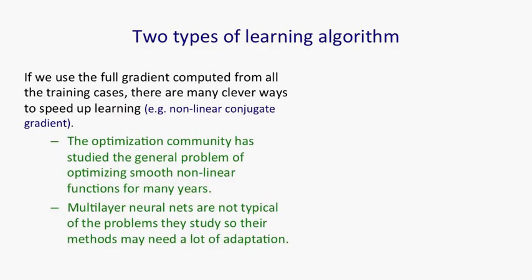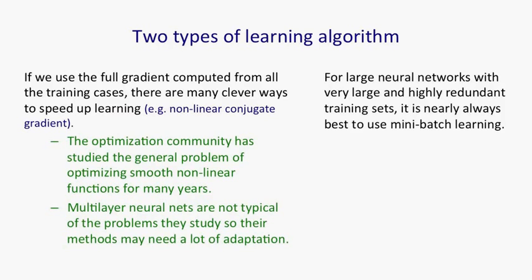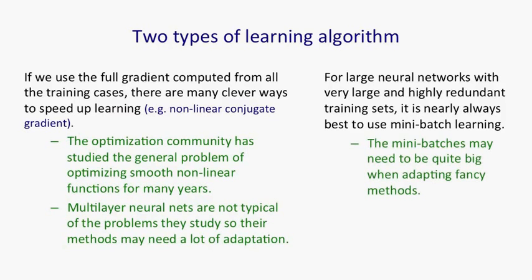Now, multilayer neural networks are pretty untypical of the kinds of problems they study, so applying the methods they developed may need a lot of modification to make them work for these multilayer neural networks. But when you have highly redundant and large training sets, it's nearly always better to use mini-batch learning. The mini-batches may need to be quite big, but that's not so bad because big mini-batches are more computationally efficient.